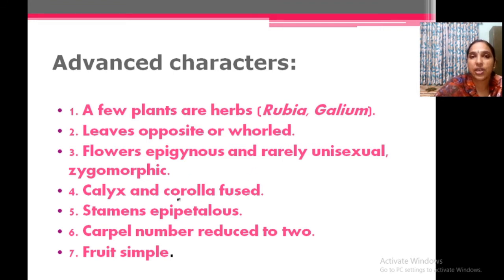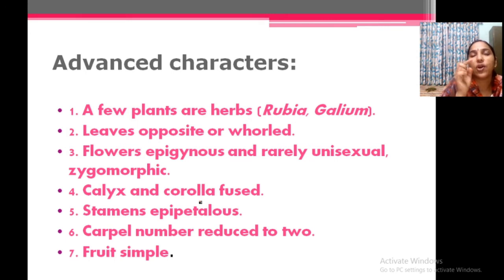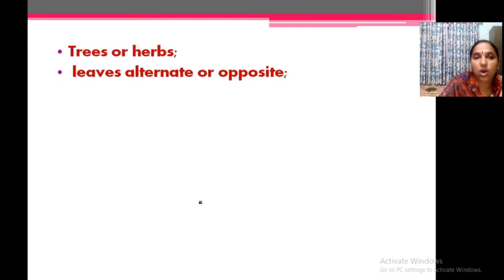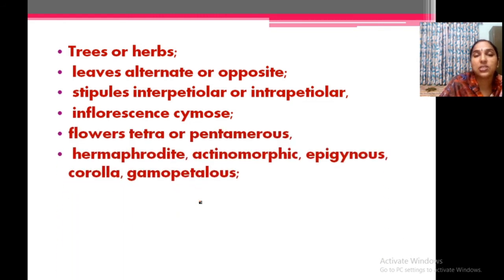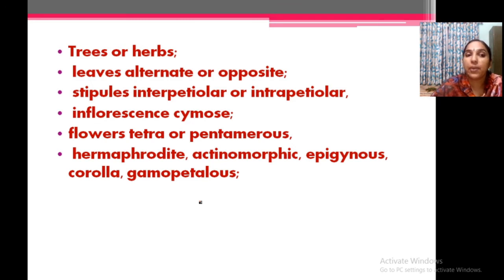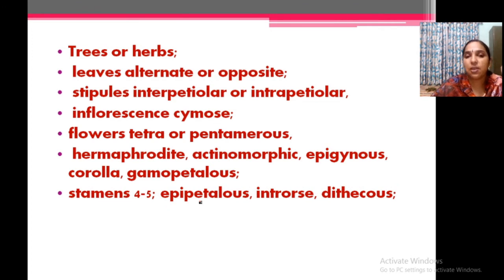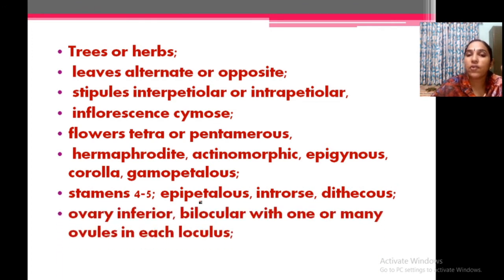Advanced characters: calyx and corolla fused — gamopetalous and gamosepalous conditions. Stamens epipetalous — stamen on the petal, present at the mouth of the corolla. Carpels number reduced to two — bicarpellary condition. The typical features of the Rubiaceae family: many are trees or shrubs, leaves alternate or opposite, interpetiolar or intrapetiolar stipules, cymose inflorescence, tetra or pentamerous flower, usually tetramerous. Bisexual or hermaphrodite, actinomorphic, epigynous. Corolla gamopetalous. Four or five stamens, epipetalous. Inferior ovary and bilocular condition. Fruit is a capsule or berry.